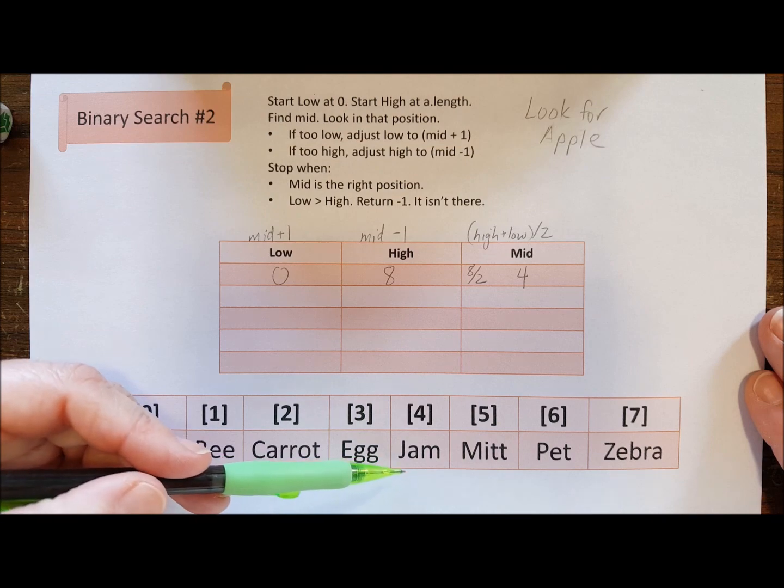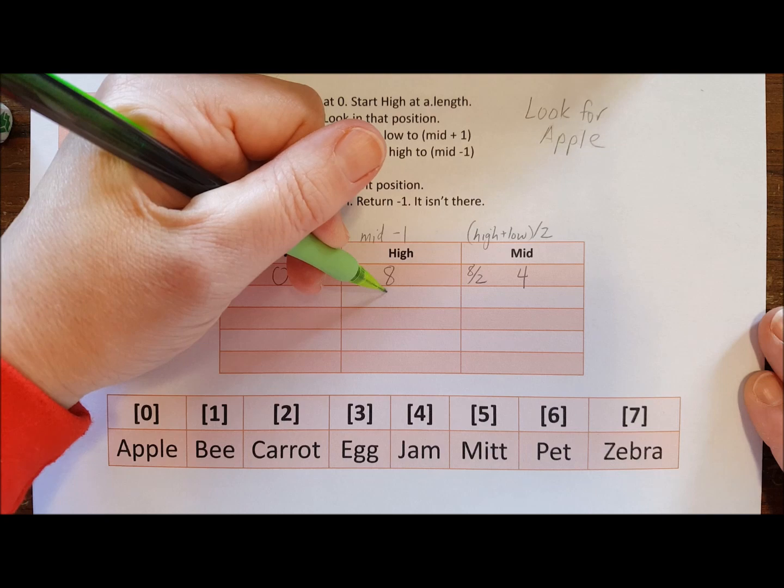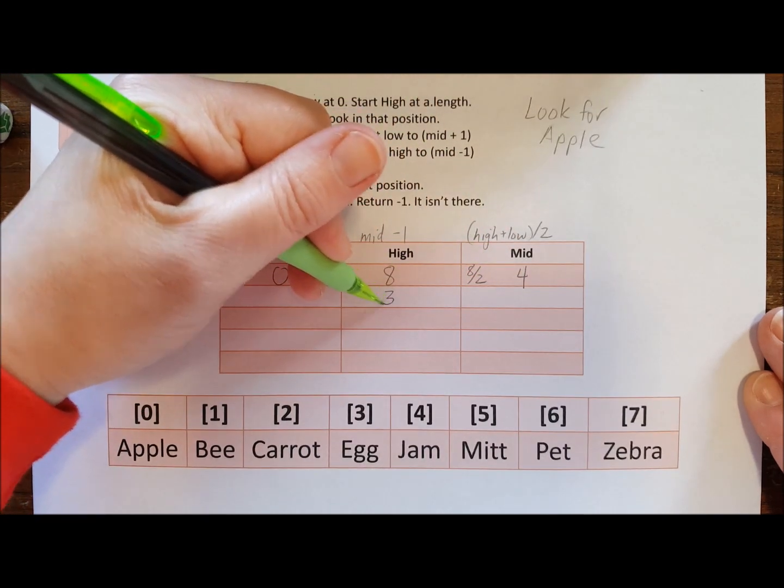Good point, okay. So Jam is bigger than apple, so that means it's too high. So that means high is going to adjust to become the mid, which is four, minus one, which will become three.